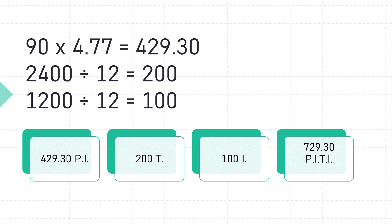The annual real estate taxes are $2,400, so we divide by 12 to get the monthly amount: $200. Homeowner's insurance is $1,200 per year; dividing by 12 gives $100 per month. Adding it all together: $429.30 principal and interest, plus $200 for taxes, plus $100 for insurance equals a total P-I-T-I of $729.30.